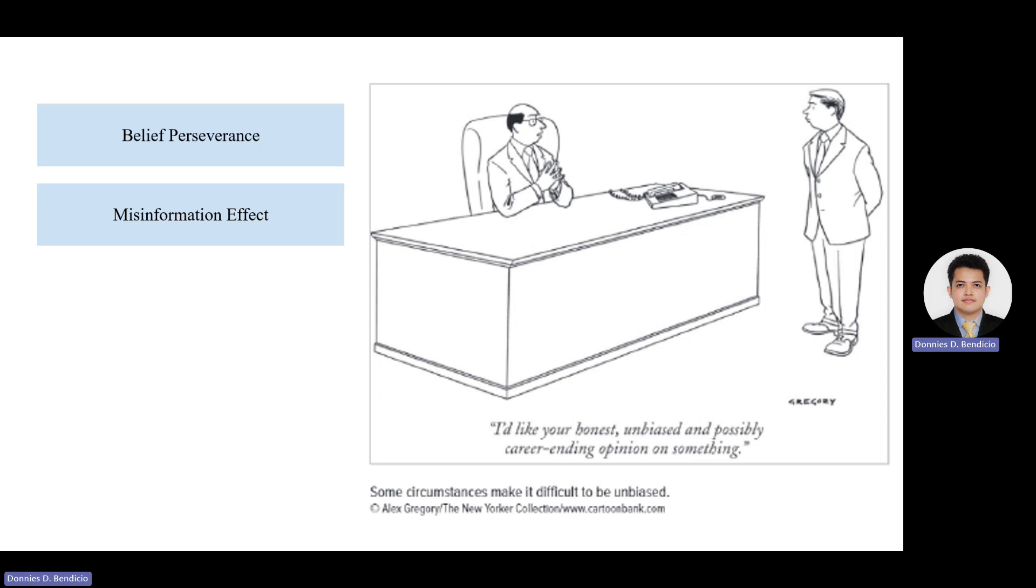Next is misinformation effect. The misinformation effect occurs when people's memories are distorted by exposure to false information, leading them to misremember events or facts. This phenomenon can shape our perceptions of social events and individuals. For example, in legal contexts, misinformation presented during witness testimony can lead jurors to form inaccurate perceptions of a defendant's guilt or innocence.